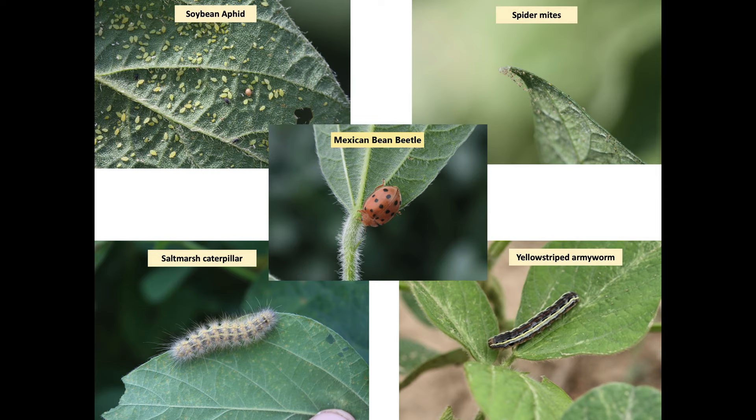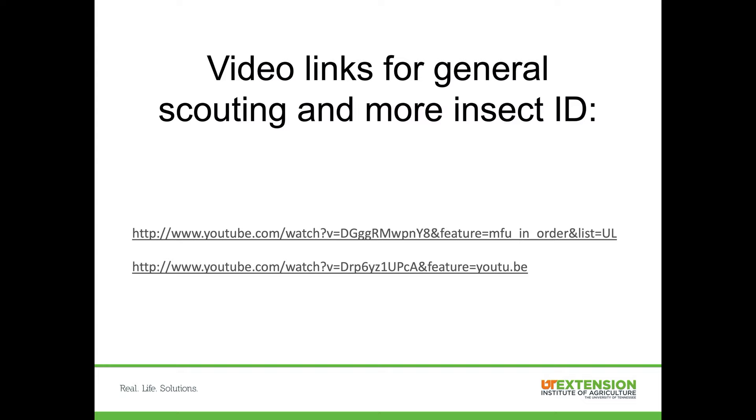Other occasional insect pests which may be present in soybean fields include thrips, cutworms, soybean aphid, Mexican bean beetles, yellow-striped armyworms, beet armyworms, spider mites, salt marsh caterpillars, and velvet bean caterpillars.